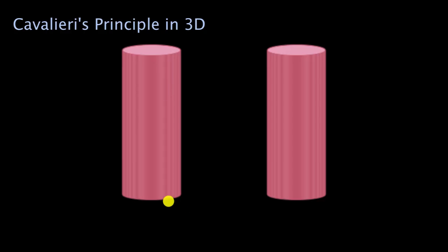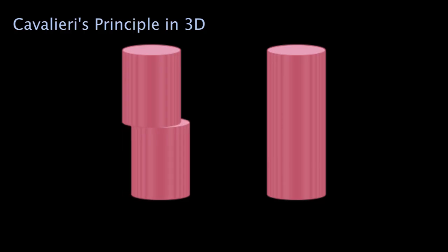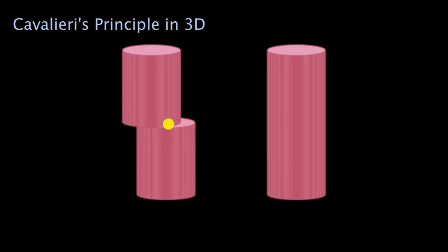Now I'm going to start cutting up this left cylinder and shifting things around. If I cut it in two and take that bottom half and shift it a bit, have I changed its volume? Clearly I have not — the combined volume of both of these half cylinders is still equal to the original cylinder.